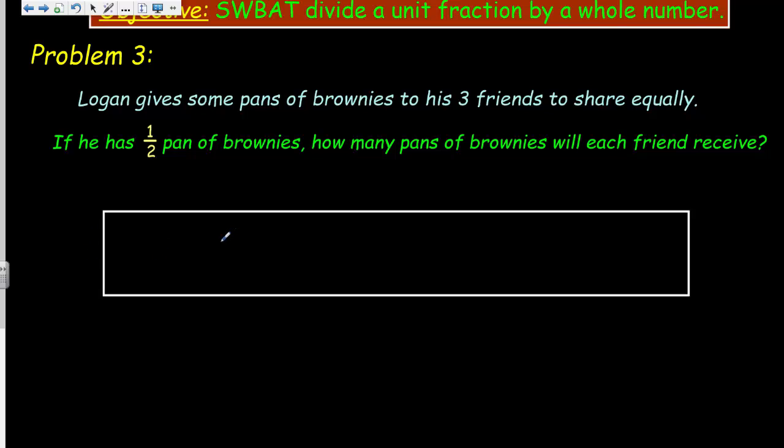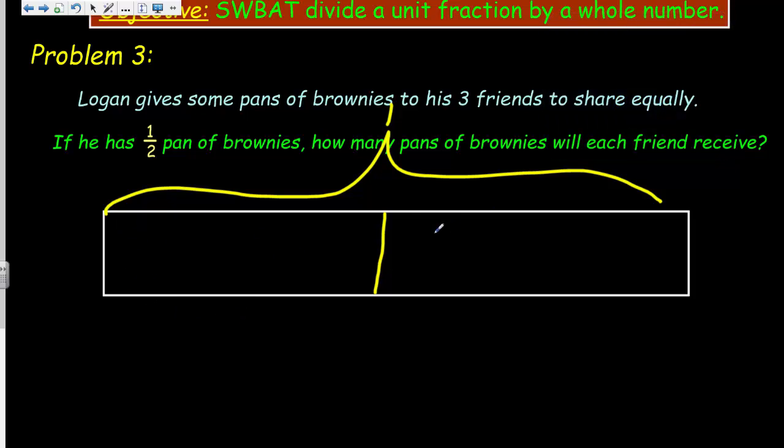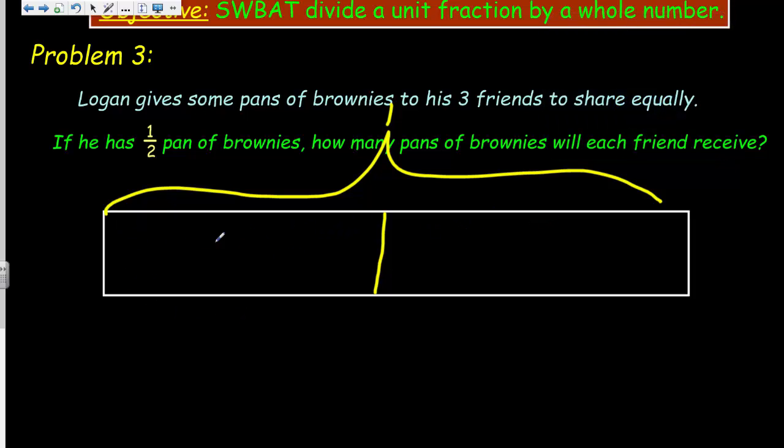Okay, so again, here what we're starting off with now is we're not starting off with one, but we're actually starting off with a half. Alright, so here's my tape diagram. Let me go ahead and I'm actually going to show this as a whole pan of brownies. So this is kind of like a whole, but we're not starting off with a whole, we're starting off with a half. So I'm actually going to split this in half to show that. So here's the half pan of brownies. Nothing over here. Okay, we have our half pan.